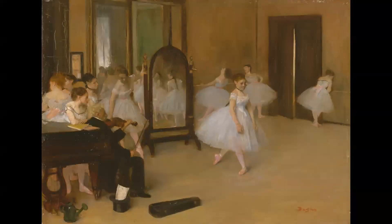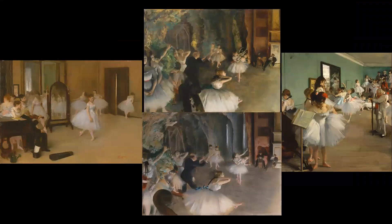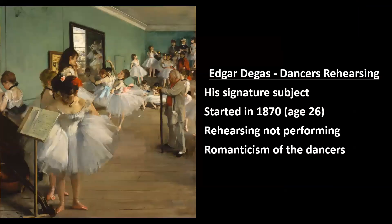One characteristic of Degas's early dancer paintings is he frequently has a large number of dancers in the work. Notice how all of these early paintings have a lot of dancers. Later, he probably concluded that was just too much work. So if you see a Degas painting with a lot of dancers, it's probably from the early to mid-1870s. If it has just one, two, or three dancers, it's probably from the mid-1870s onward.